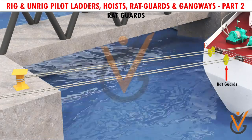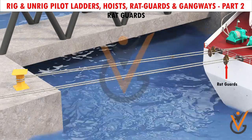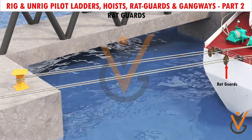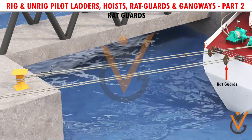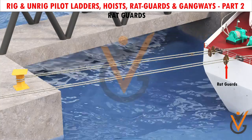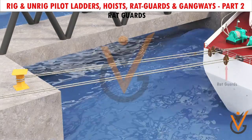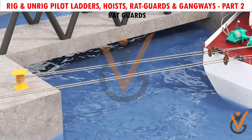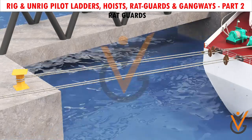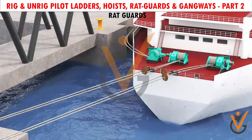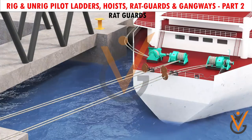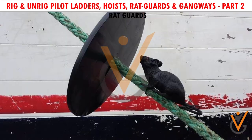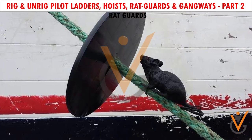Rat guards. Rat guards are used around the hawsers of ships to prevent rats and other rodents on shore from boarding the ships by simply walking along the hawsers. Heretofore, rat guards have generally comprised large circular discs, which have had to be installed on the ship's hawsers by hand under inconvenient circumstances.